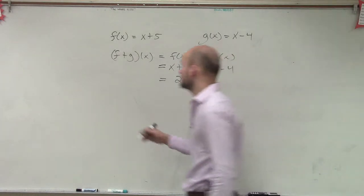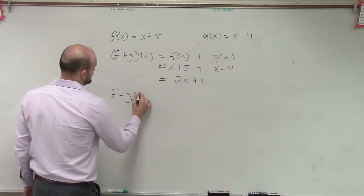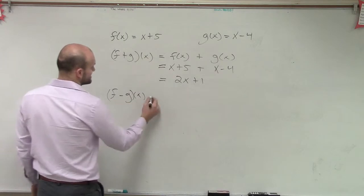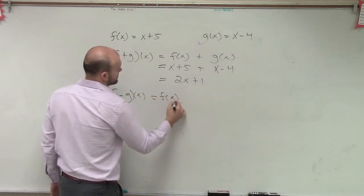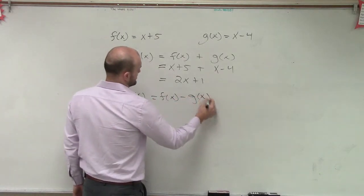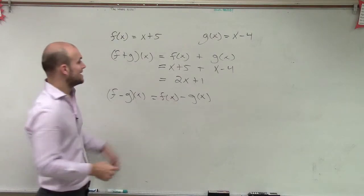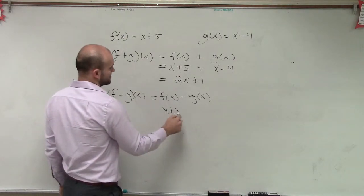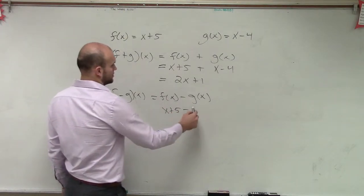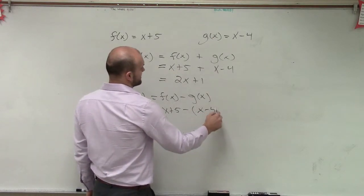Now we have to do f minus g of x. And what that states is f of x minus g of x. So we have f of x, which is x plus 5, and then minus x minus 4.